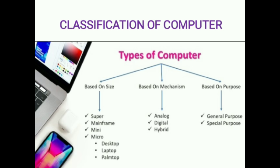In based on mechanism, there are three types. First one is analog computer, second one is digital computer, and third one is hybrid computer. And the third classification is based on purpose. In that, there are two types: first one is general purpose computer and second is special purpose computer.